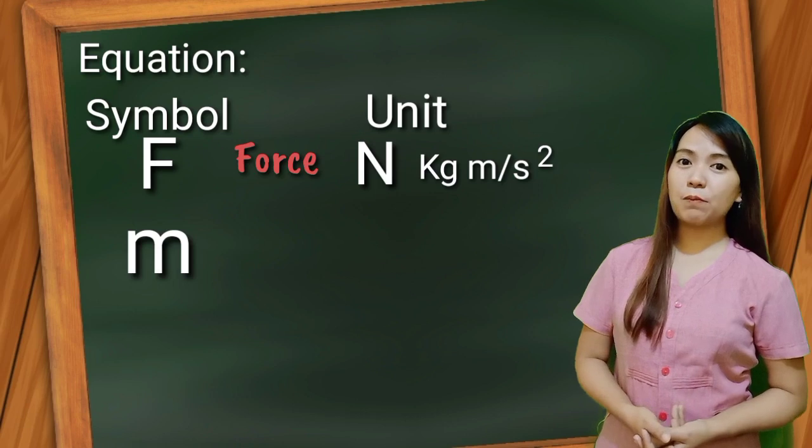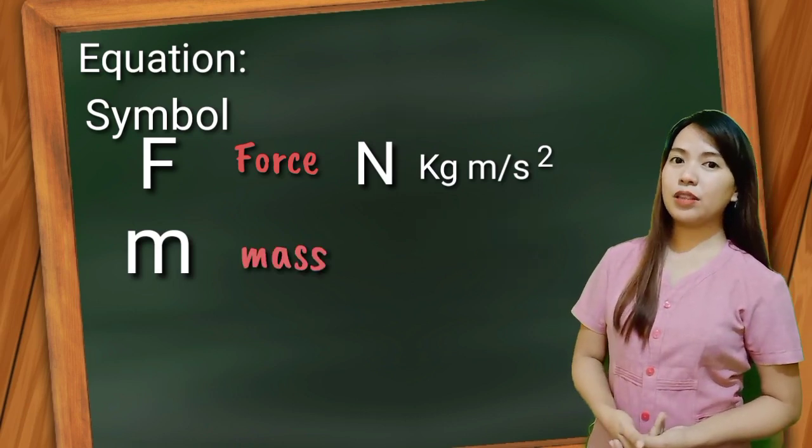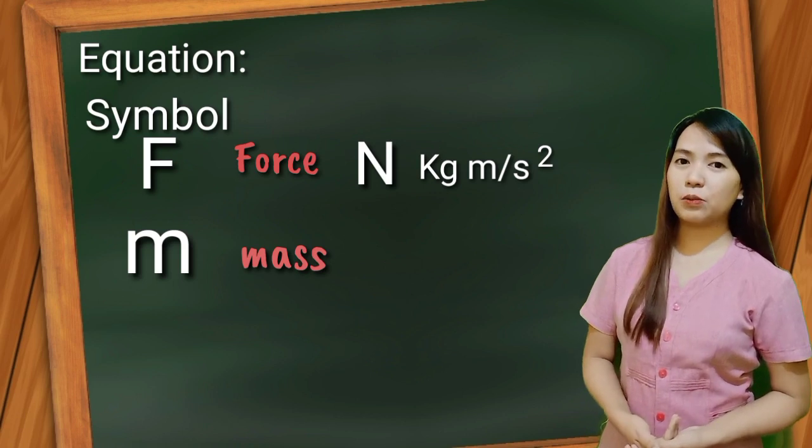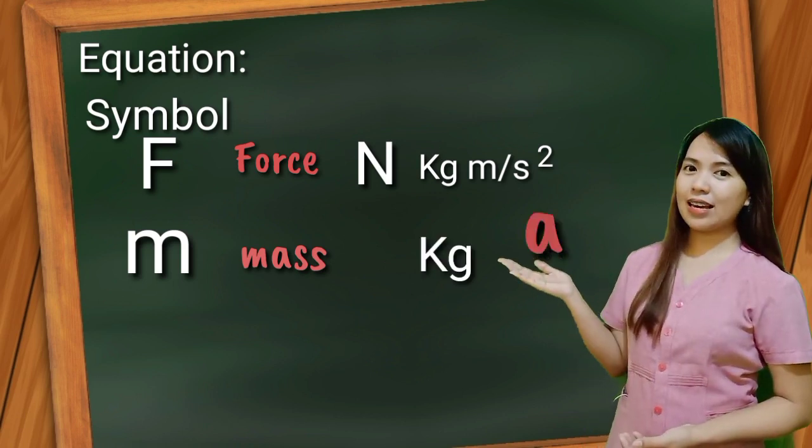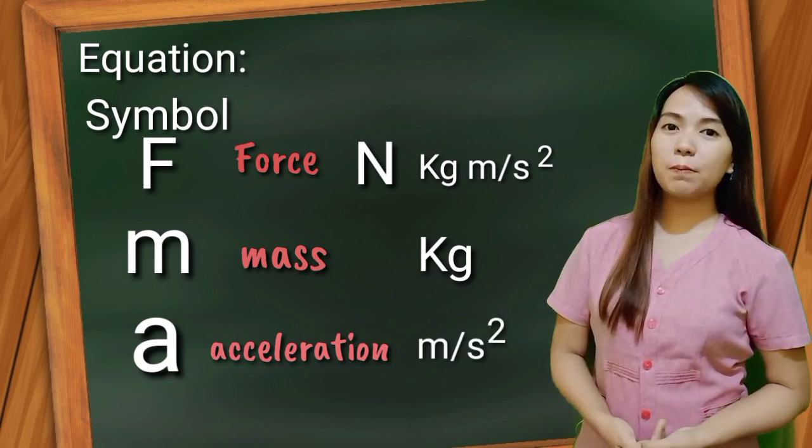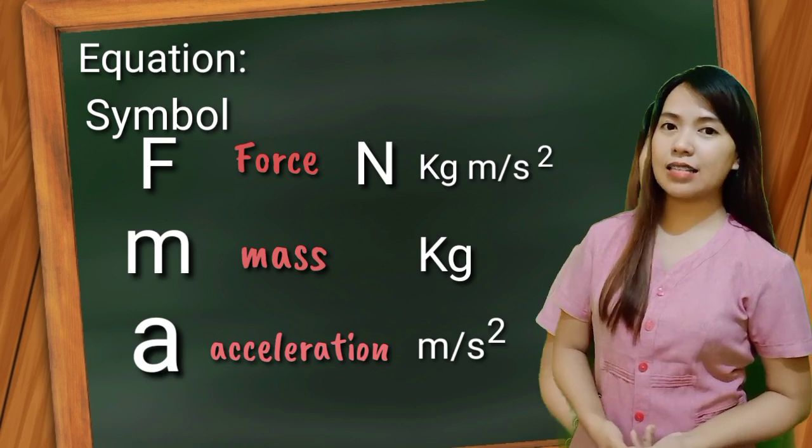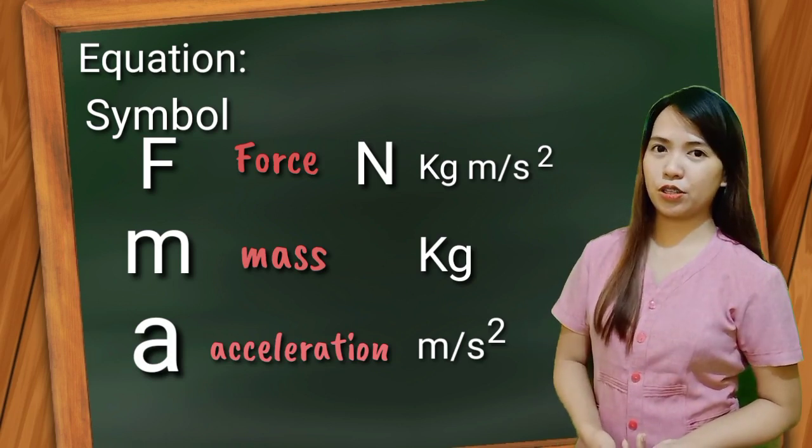M is the symbol for mass and the unit we use is kilogram. Small letter A is the symbol for acceleration. We use meter per second squared or meter per second per second as the unit for acceleration.